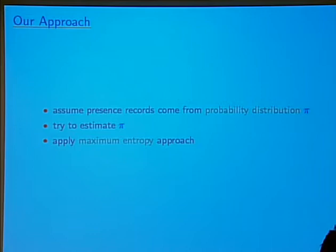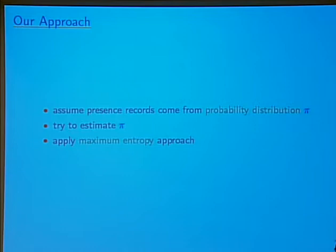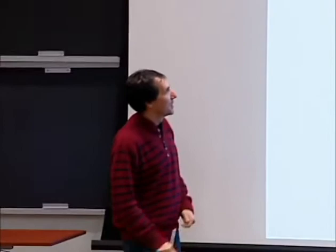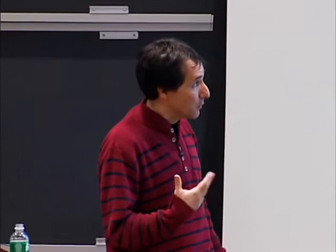Now I want to talk about our approach at a high level. We assumed that the presence records are actually coming from a probability distribution which is representative of the actual population distribution of the species. We call that distribution pi. Our goal is to estimate that probability distribution, and what we're doing is using the maximum entropy approach.